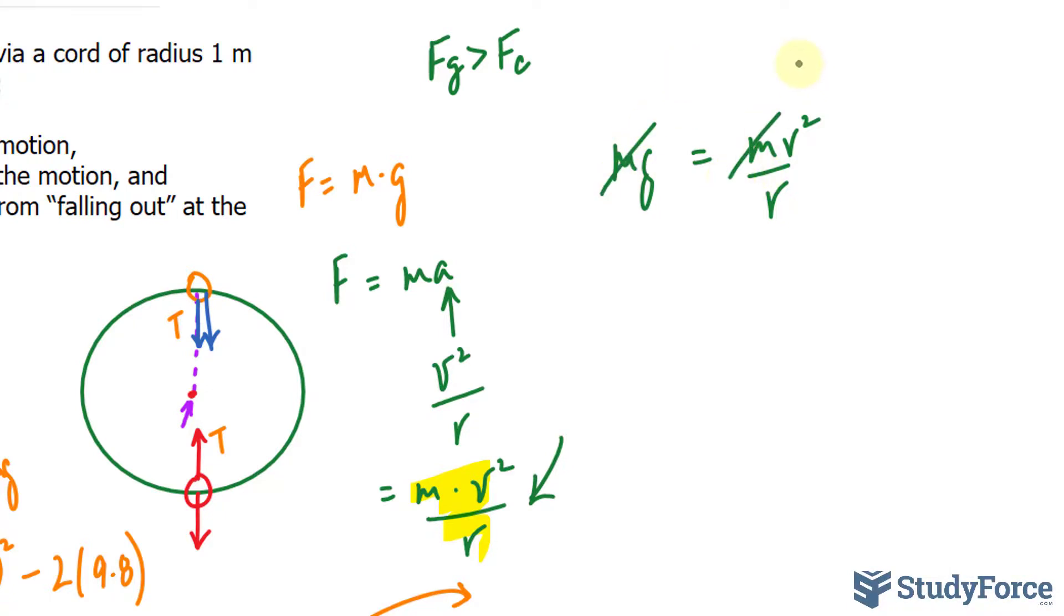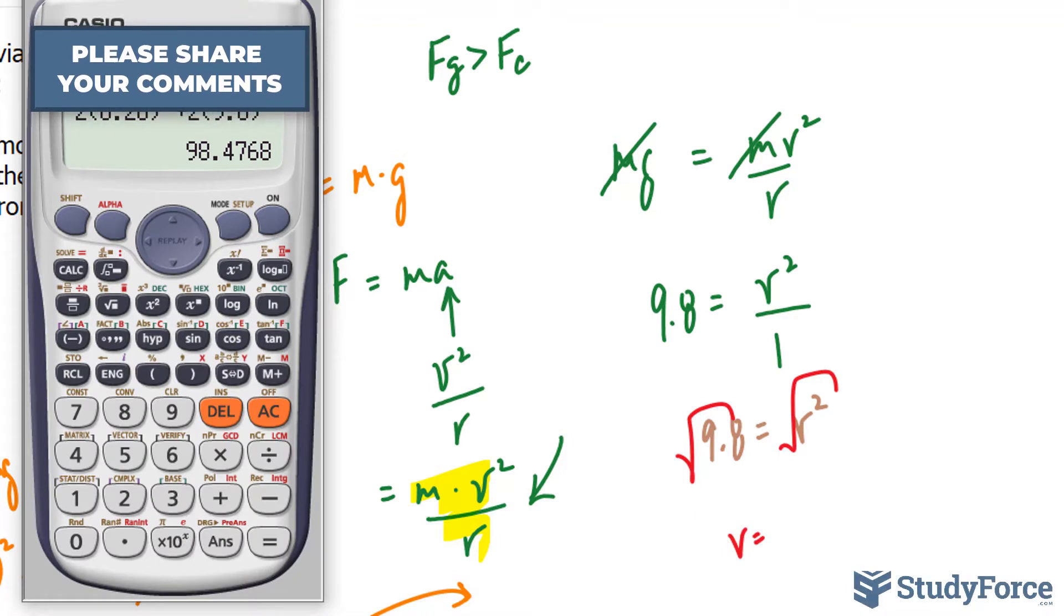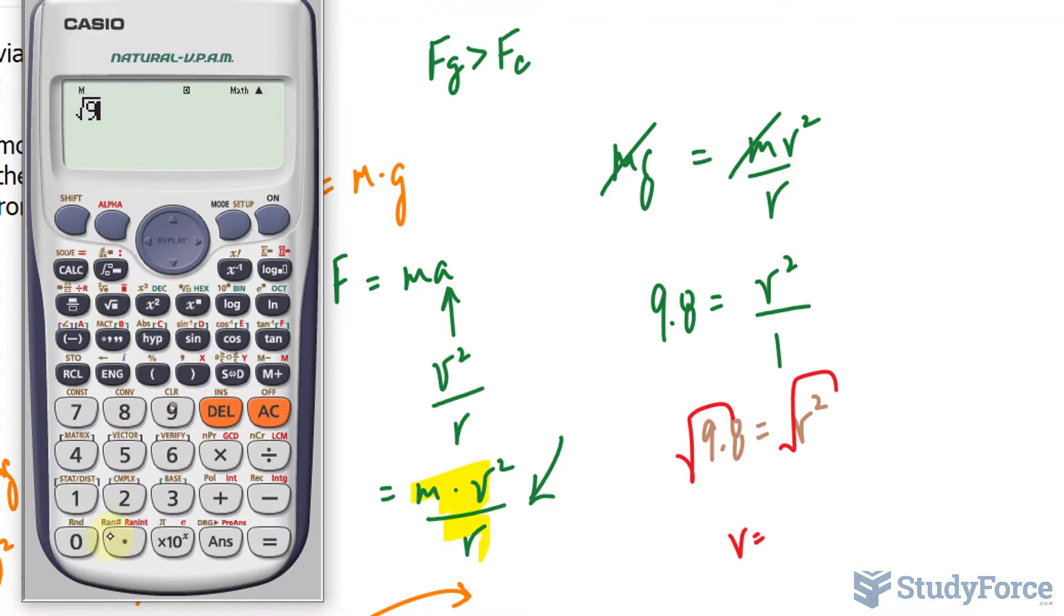Now notice that these m's are going to cancel out because we have one on each side. I have 9.8 is equal to v to the power of 2 over r, which was 1 meter. We get now 9.8 is equal to v to the power of 2. And square rooting both sides, we get a value for v being 9.8 square rooted is 3.13.